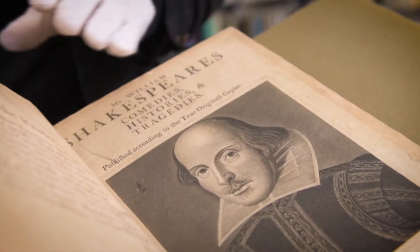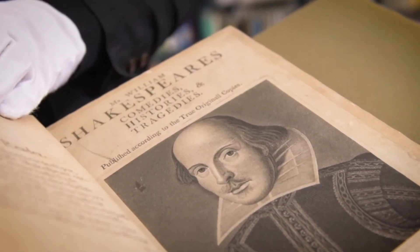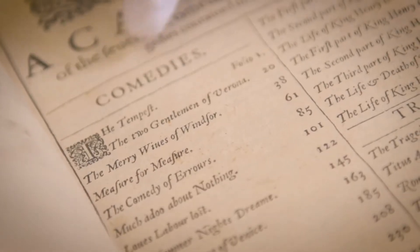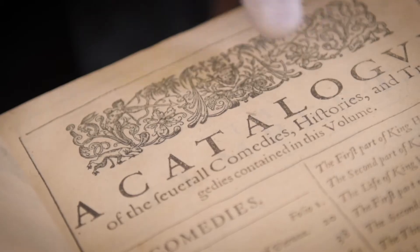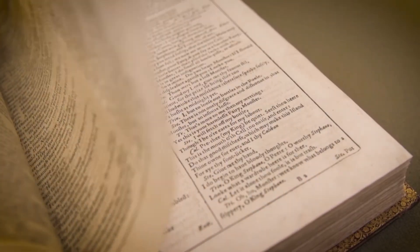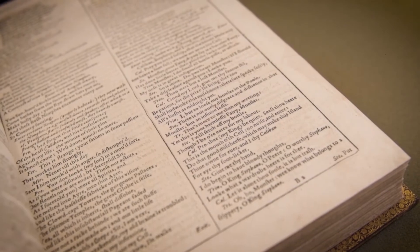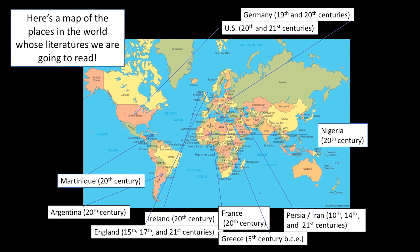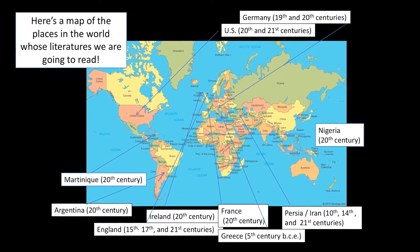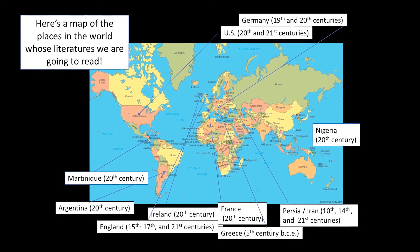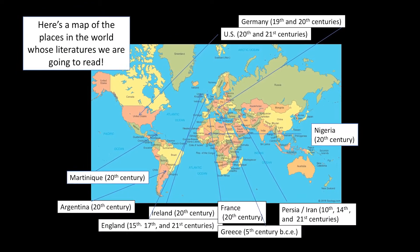We'll explore other places and times by reading literature — short poems and plays — and how these plays and short poems can open a window onto places like Nigeria, Ireland, Iran, the Caribbean Island of Martinique, Argentina, England, Germany, and Ancient Greece.